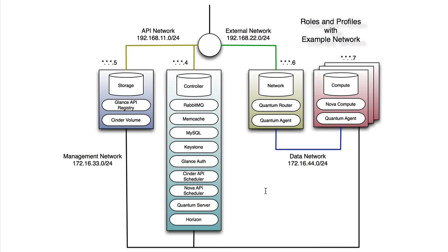The Grizzly module is based on an idea called roles and profiles. Within your deployment, each node is assigned a role. For example, you'll have a controller node in your OpenStack deployment, a storage node, a network node, and some number of compute nodes. Each of these roles is assigned profiles. So for example, the controller node has a message queue, a cache, a database, and many of the OpenStack API endpoints. The storage node has the Glance API and registry as well as the Cinder volume service. The network node handles routing through the Quantum service. And the compute node hosts the hypervisors and all of the guest operating systems.